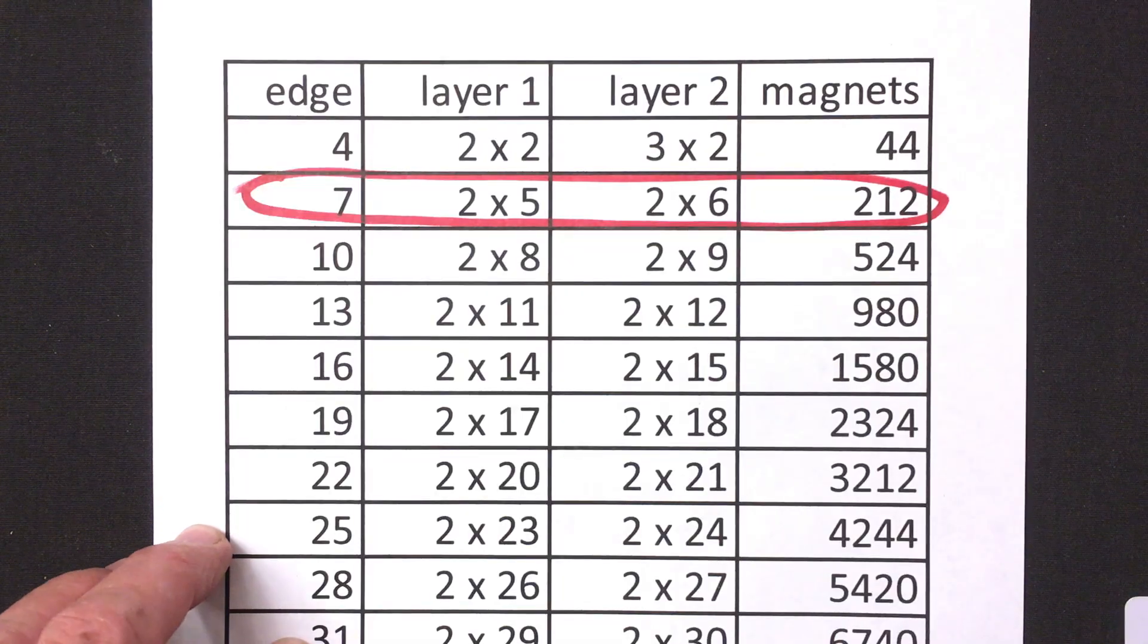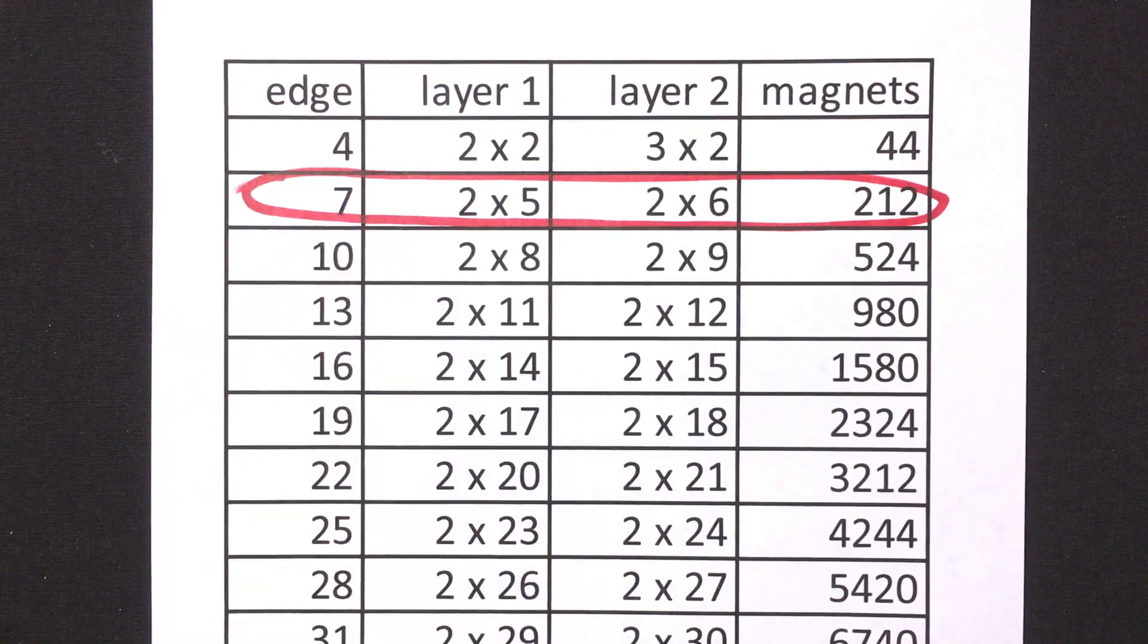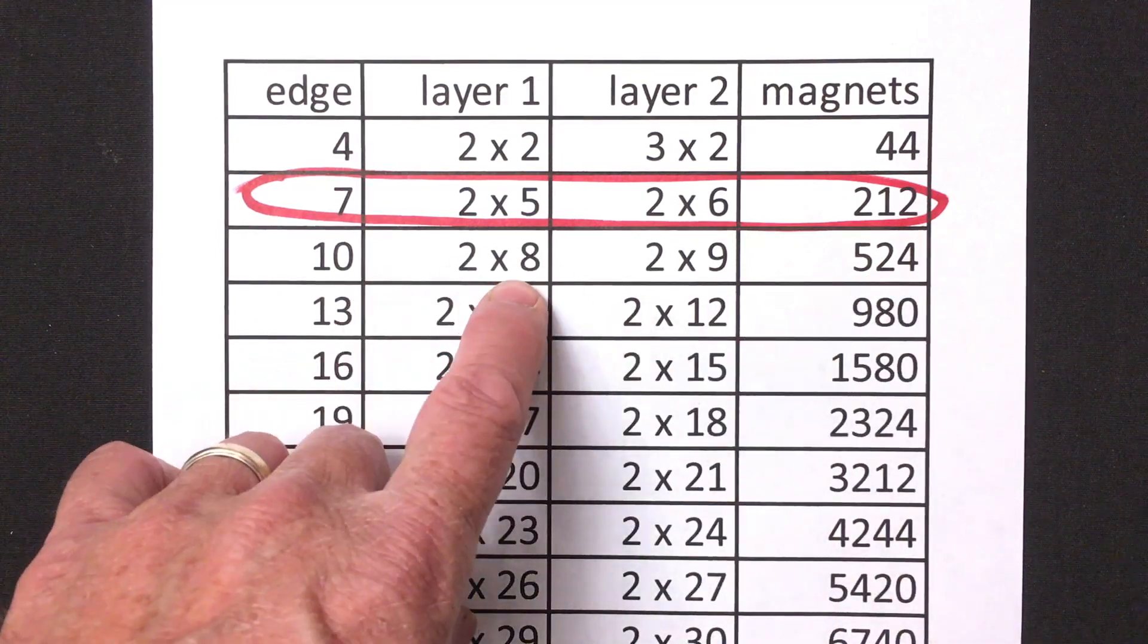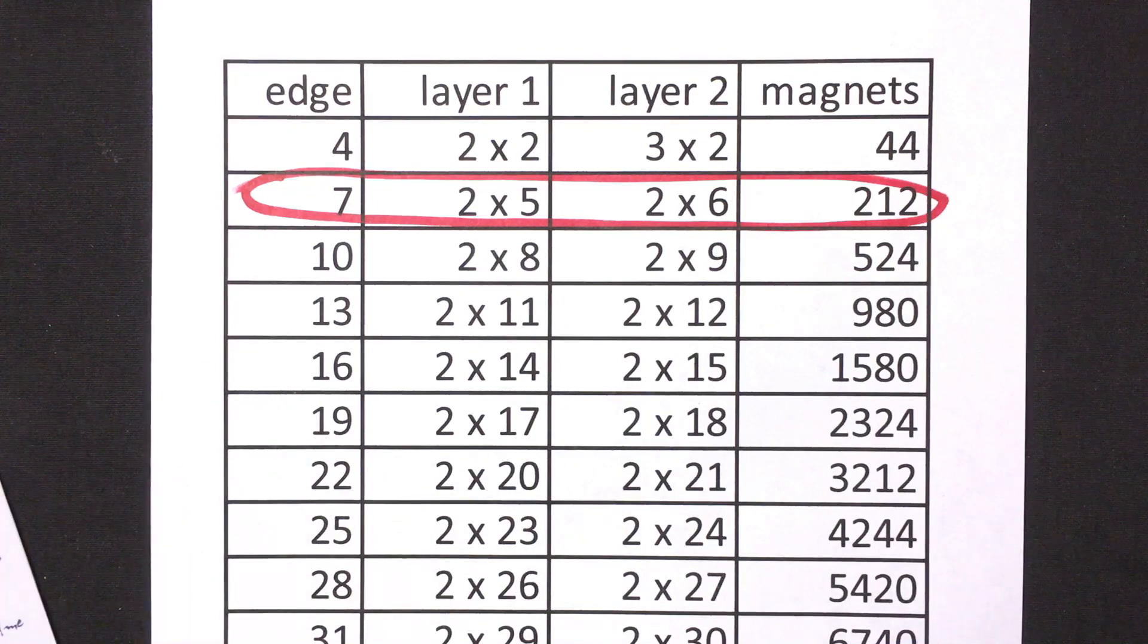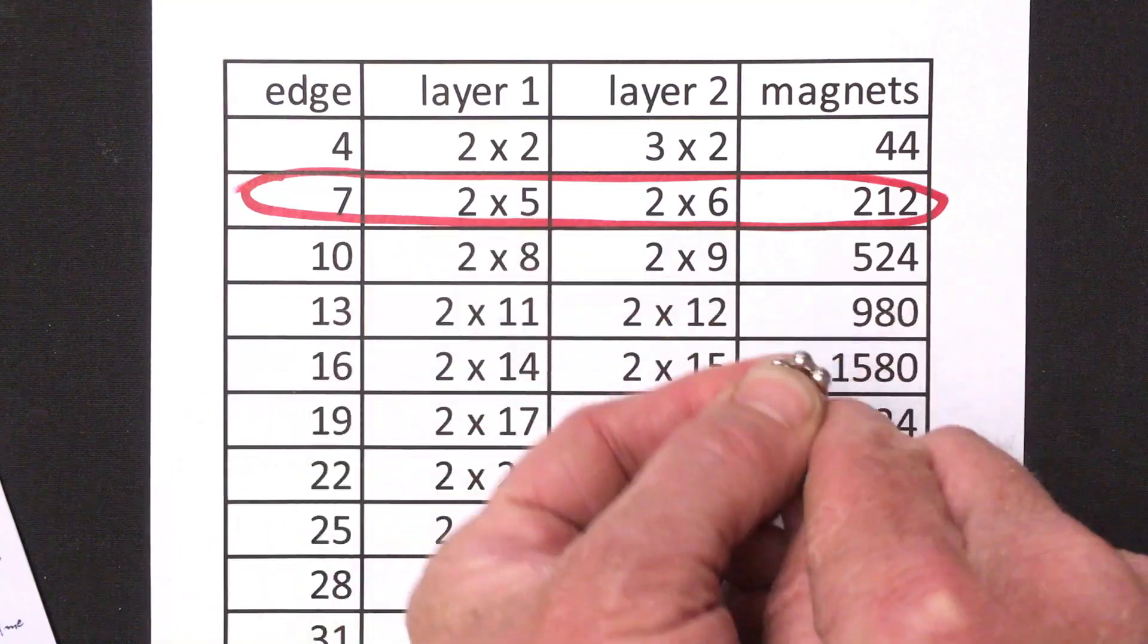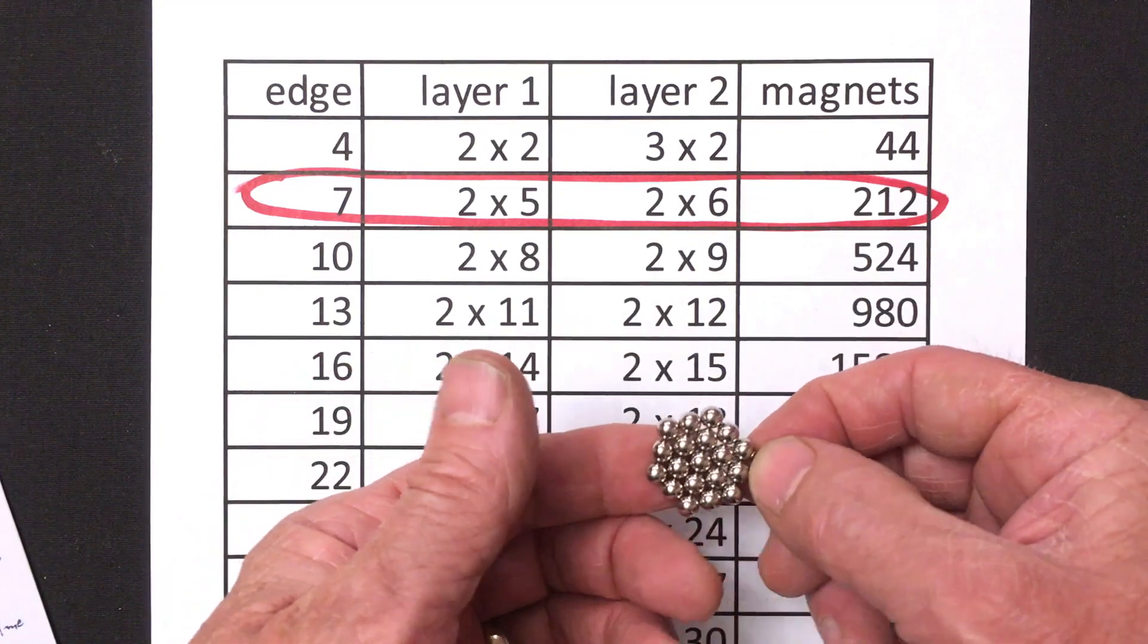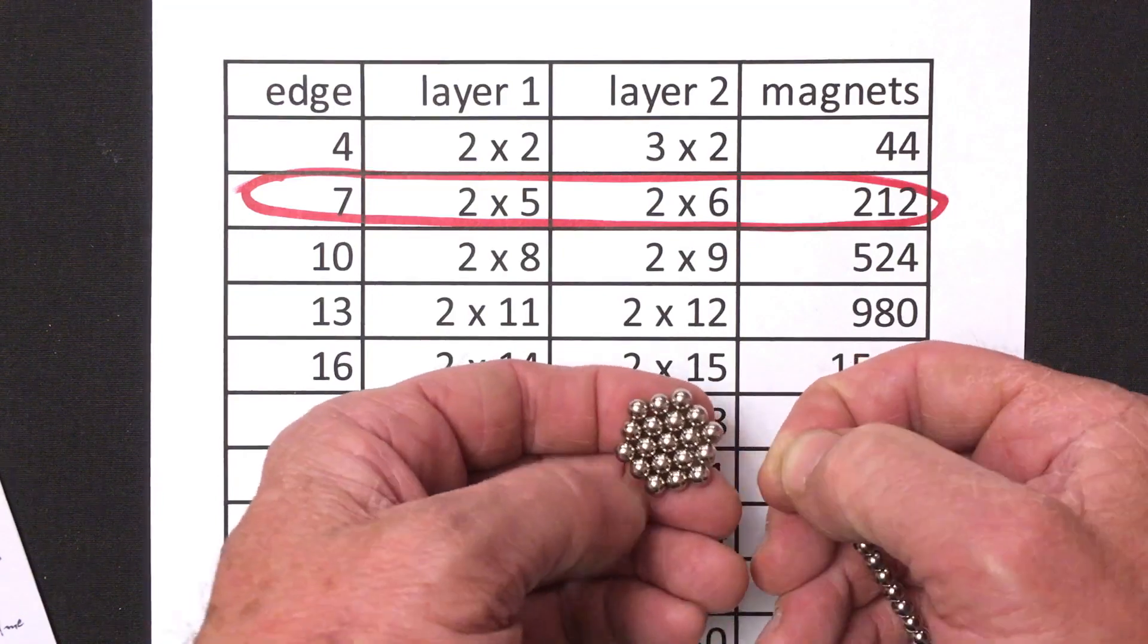Just a quick note on building this shape in other sizes other than the edge count seven. For example if we wanted to build it with an edge count of ten and we have 524 magnets then the way to proceed is first to build layer one. Layer one is always built starting from a filled hexagon. That's always our starting point for layer one.